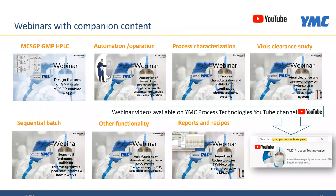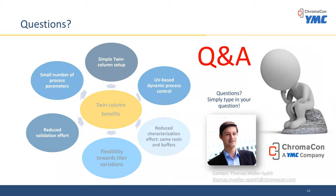I'd like to bring back Thomas now for the Q&A. We have a number of good questions. First: would validation of other multi-column systems—non-two-column systems—follow the same risk assessment? Yes, in general. The procedure I outlined is also applicable to other multi-column processes. It's just that the size of the DOE matrix would certainly increase because there are a larger number of process parameters.